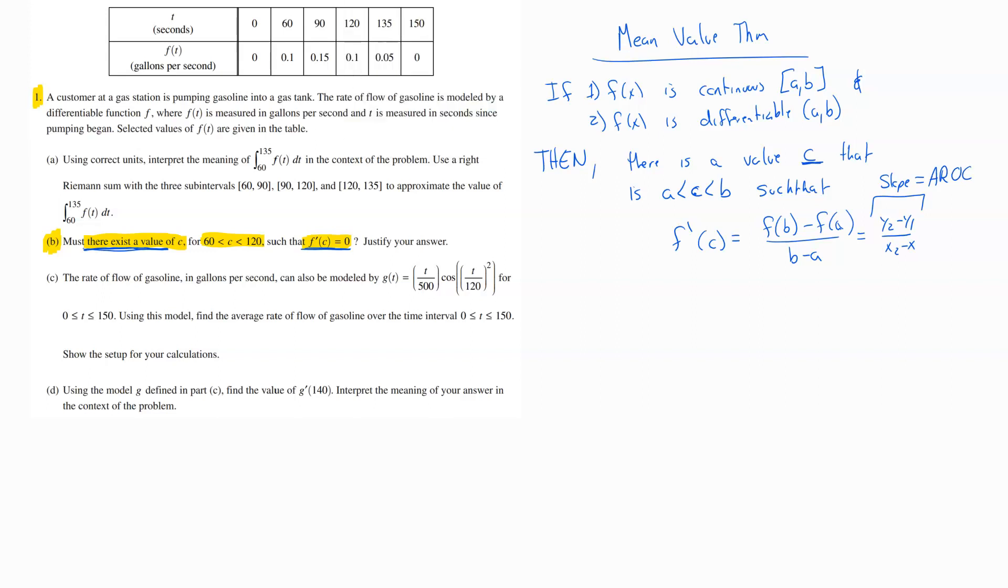So what we need to do, if we're going to say yes or no on this, is determine can we say for sure that these two things are true? If we can say that, and then we can see that this value here equals what we're looking for, zero, then we can say for sure there is a value f prime of C that would also equal zero.